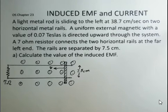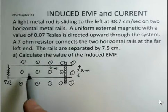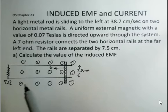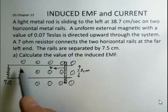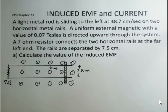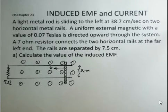At the present time, the speed of the rod is 38.7 centimeters per second. We have an external magnetic field 0.07 teslas coming straight up through the paper perpendicular to the area of a loop that's formed by the rod, the rails, and this resistor, a 7 ohm resistor on the end. So we want to know what is the value of the induced EMF at this time.